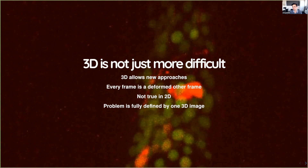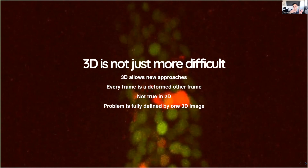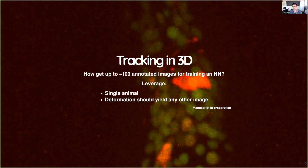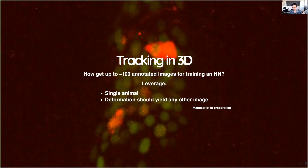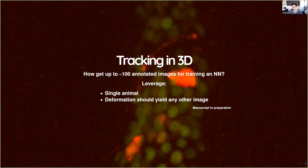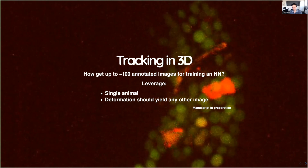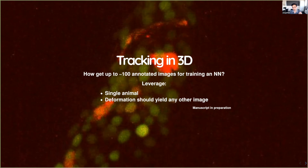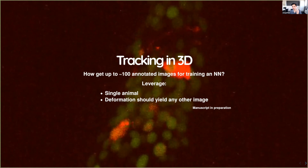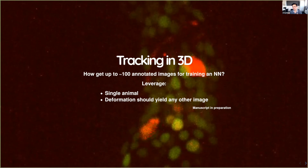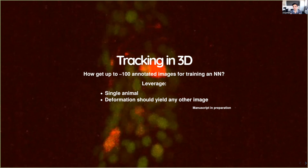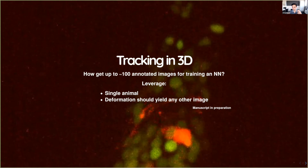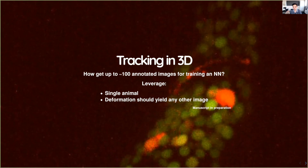We want to leverage two facts special to this problem. First, a whole recording is always of a single animal, which constrains the problem in a helpful way — unlike yeast where each time it's a slightly different cell. Second, the 3D nature means deforming one image should give you, in principle disregarding noise, any other image in your time series. We want to start with annotated images and leverage these constraints rather than just treating it as a harder tracking problem.